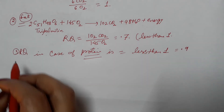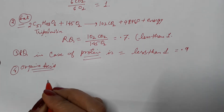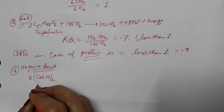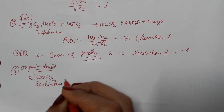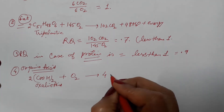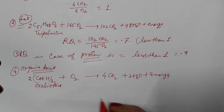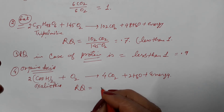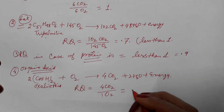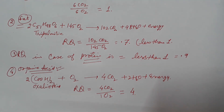In case of organic acid, we are taking the example of oxalic acid. Two molecules of oxalic acid are used up here. One molecule of oxygen is used up, giving rise to four molecules of carbon dioxide, two molecules of water, and energy. So, the RQ in case of organic acid equals 4 divided by 1, which comes equal to 4 — that is, more than 1.